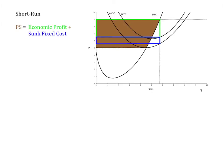Thus, producer surplus for a seller in the short run equals sunk fixed cost plus any economic profit. That is, the brown area on this diagram is exactly equal to the area of the blue rectangle — short-run average total cost minus average non-sunk cost times Q — plus the area of the green rectangle — price minus short-run average total cost times Q.